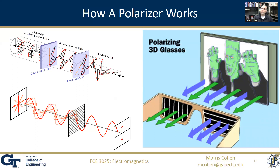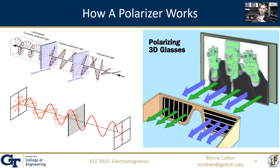One lens may be set up to allow horizontal polarization, and the other might be set up to produce only vertical polarization. With the right kind of screen and projector, you can create different linear polarizations reflecting off a screen, so your left eye and your right eye are seeing two different images — that's how you synthesize three dimensions on a flat two-dimensional screen.